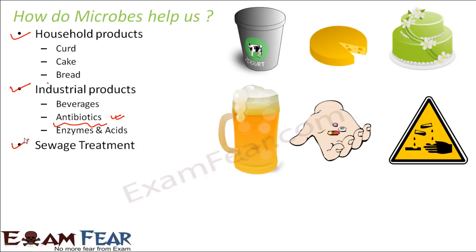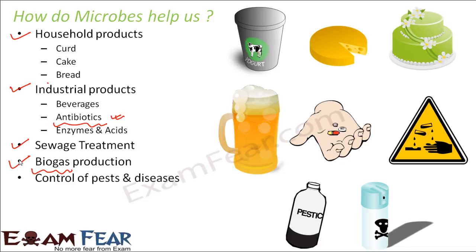For a more detailed understanding of sewage treatment, you can refer to the video lessons of class 12th biology or class 11th biology. Biogas production is another environment-friendly fuel in whose production microorganisms also play a major role. Microbes also play a major role in the control of pests and diseases in the case of plants or animals.